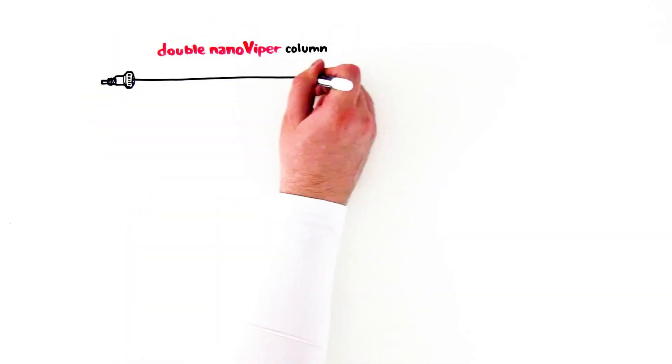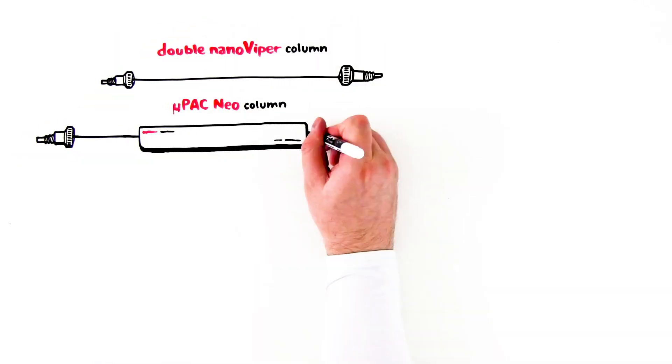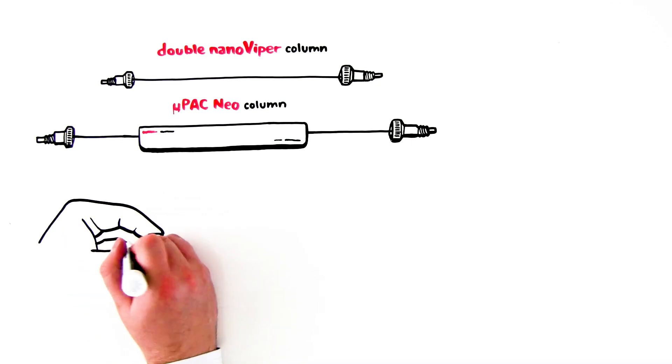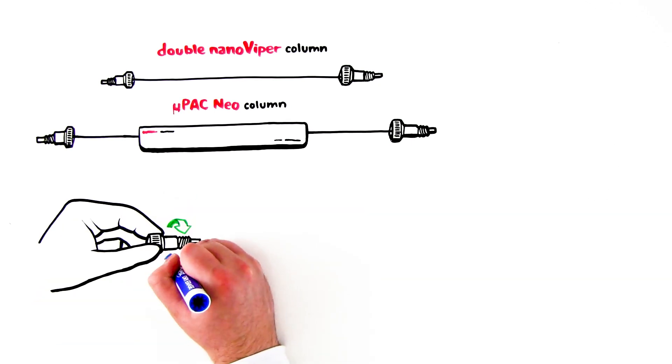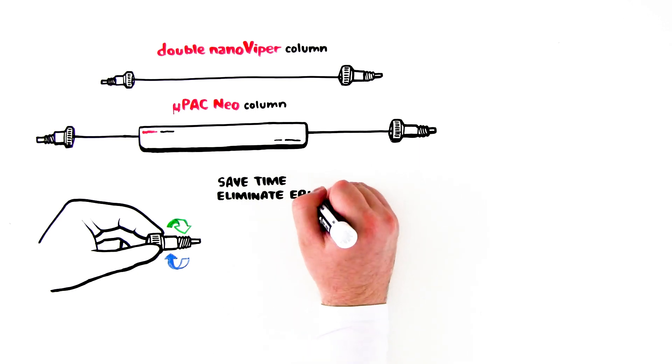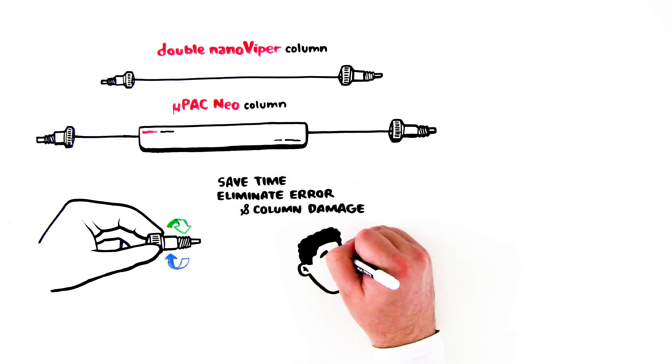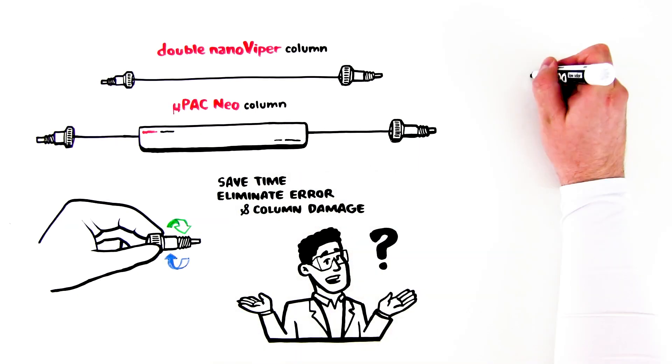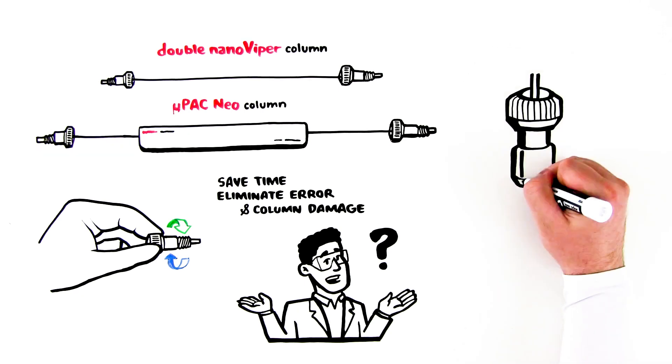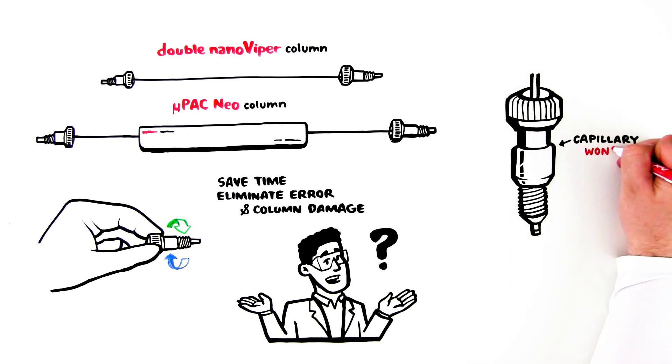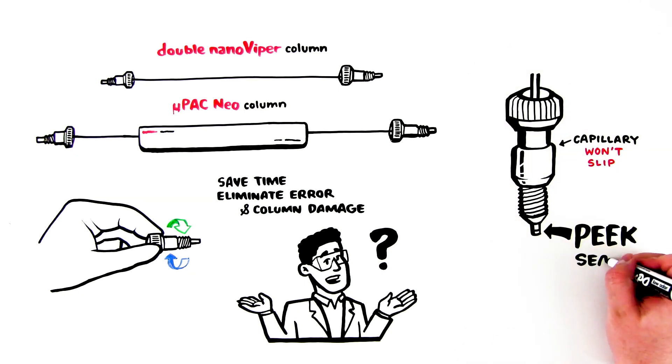Now let's look at the Double Nano Viper and Micropack Neo columns. These columns have a Nano Viper finger-tight fitting system at each end. Connections that save time and eliminate error and column damage. But how can you be sure they work every time? It's all about the design, which prevents the capillary from slipping over time and the peak forming a leak-free connection.